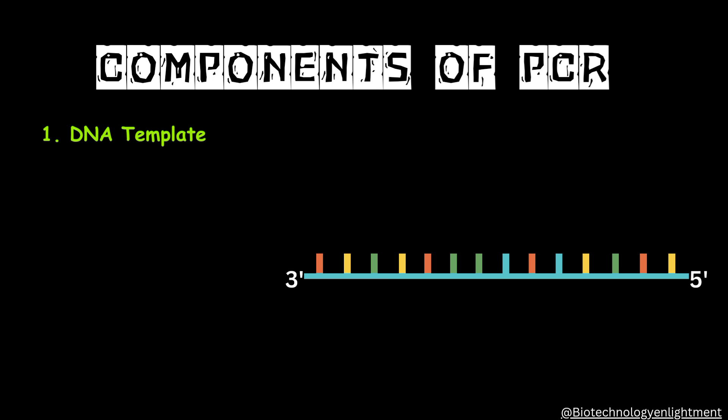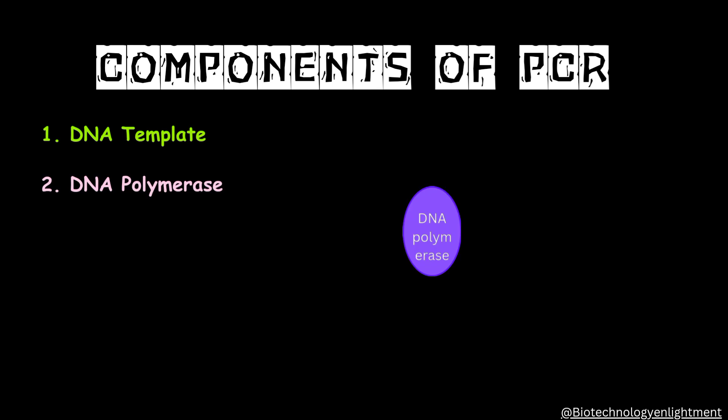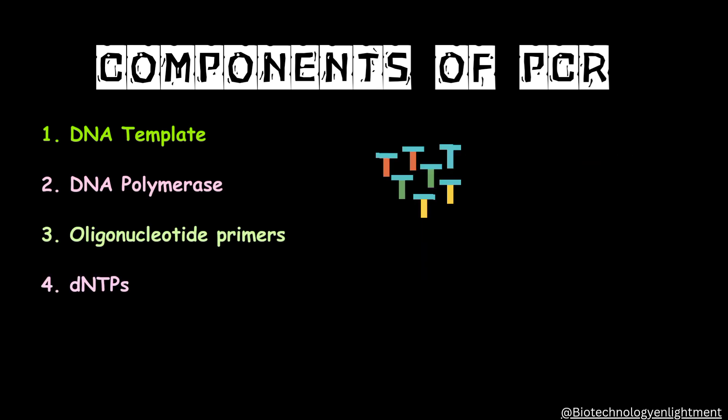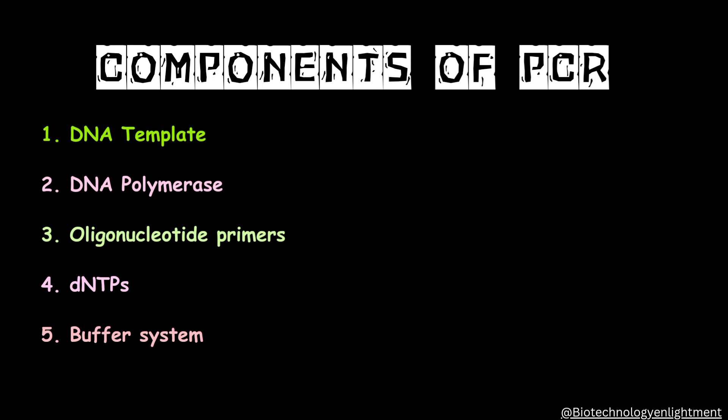The components which are required in PCR are: DNA template, DNA polymerase, oligonucleotide primers, dNTPs or deoxynucleotide triphosphate, and the buffer system. These are all the components which are required in PCR technique.